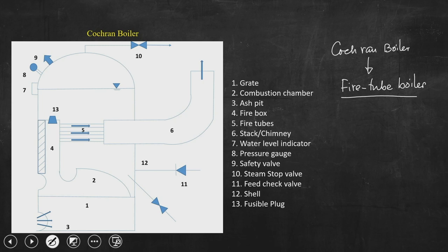From the name itself we can understand what a fire tube is. The hot flue gas passes through the tube, while water is allowed to pass through the shell. When these two different streams interact, they exchange heat and water is converted into steam upon taking heat from the high temperature products of combustion — the flue gas. Let us first identify the flow direction of both the water stream and the flue gas stream.